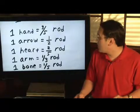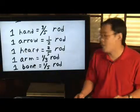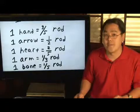They used one heart, which is two fifths of a rod. One arm, which is equal to one third of a rod. And one bone, which is equal to one fifth of a rod.